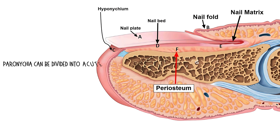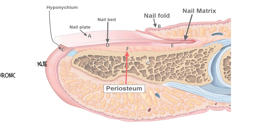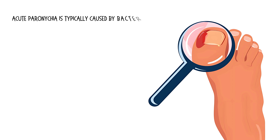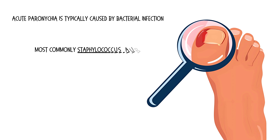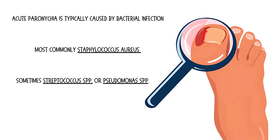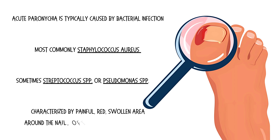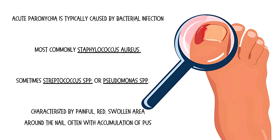Paronychia can be divided into acute and chronic. Acute paronychia is typically caused by bacterial infection, most commonly Staphylococcus aureus and sometimes Streptococcus species or Pseudomonas species. It is characterized by a painful, red, swollen area around the nail, often with accumulation of pus.